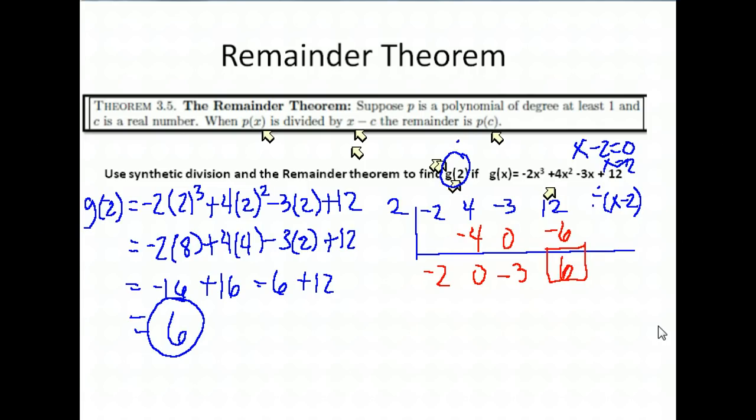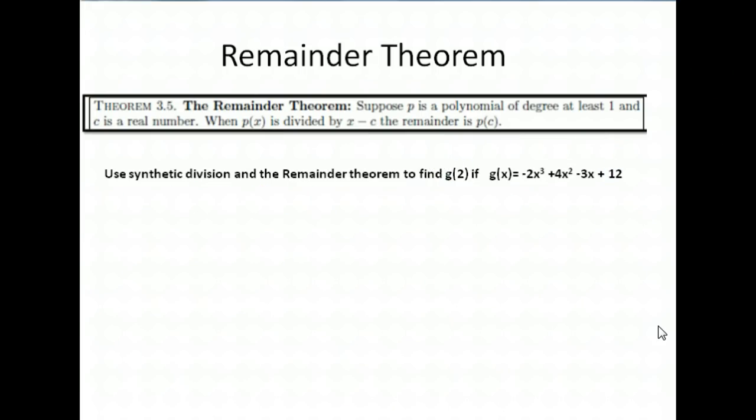We'll look at that. Our remainder was 6. So dividing by x minus 2 was the same as plugging 2 into our function. And we're going to use that fact so that rather than plugging a number into the function, we just do synthetic division instead.